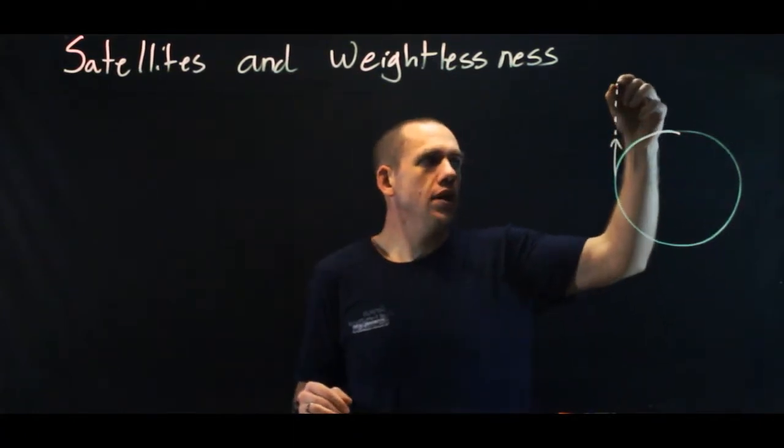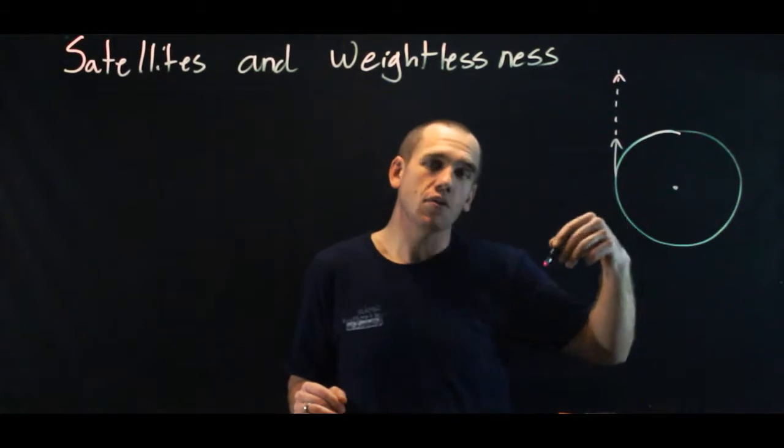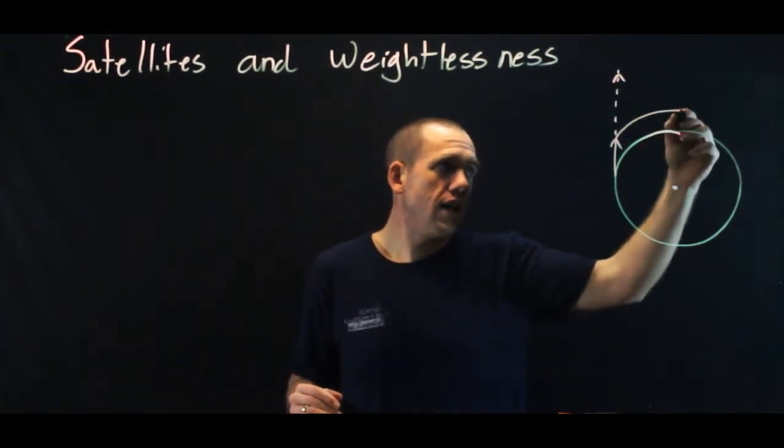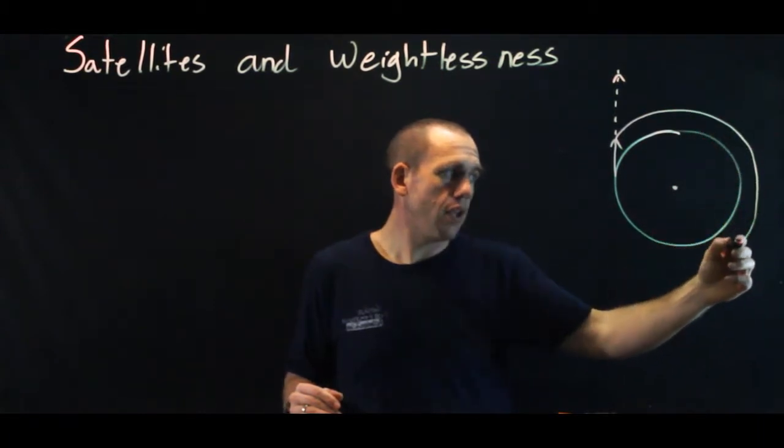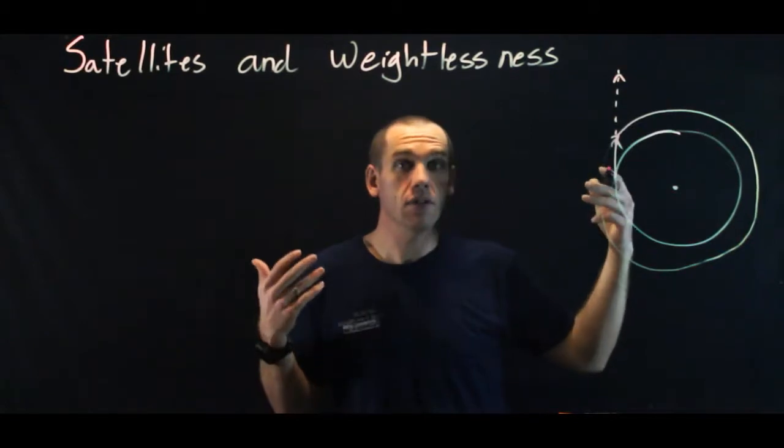Well, it would continue in a straight line path except that there is a force directing it back towards the center. That force causes it to curve, and so it curves around Earth and now it's in orbit. Well, how come it doesn't fall back to Earth? The answer is it might.